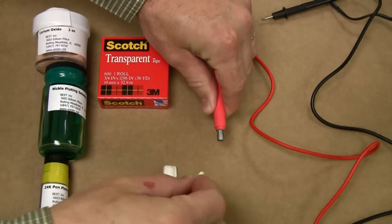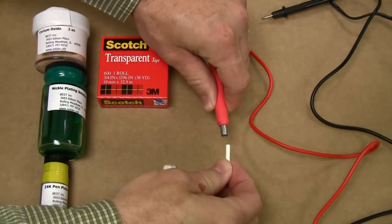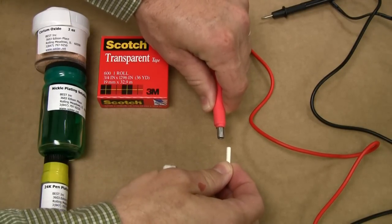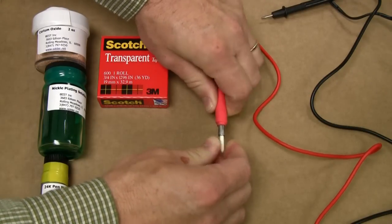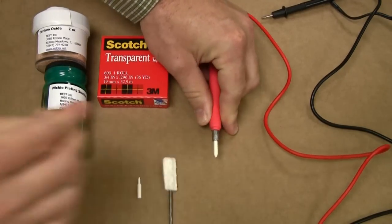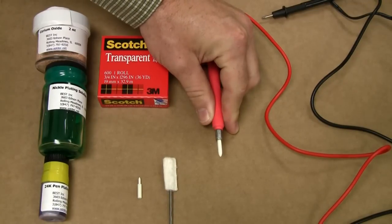Then you just do whichever applicator you want. Now what I do with my applicators, I cut about three eighths of an inch off and it brings it closer and that will get the current flowing through. If not, it's very long like that.